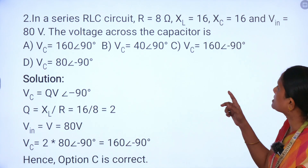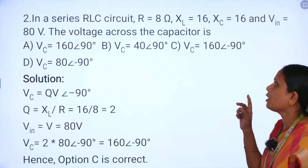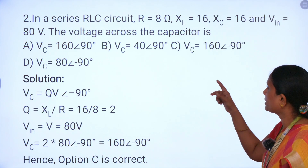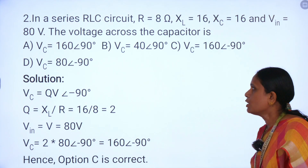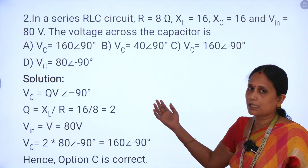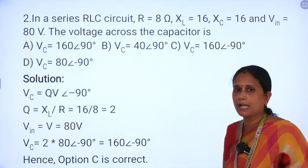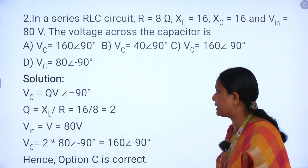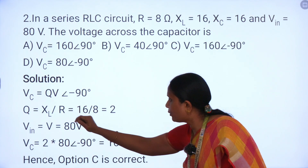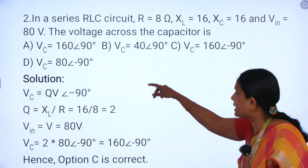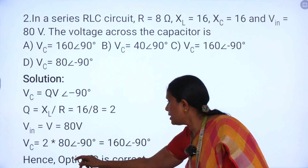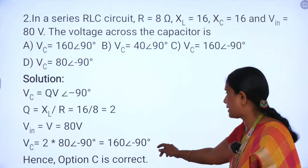Second problem: In a series RLC circuit, R = 8 Ω, XL = 16 Ω, XC is given, and voltage V = 80 V. We have to calculate the voltage across the capacitor. Options: 160∠90°, 40∠90°, 160∠−90°, 80∠−90°. Since the given XL and XC values indicate operation below resonance, the circuit acts as a purely capacitive circuit and VC = QV ∠−90°. First find Q = XL/R = 16/8 = 2. Then VC = 2 × 80 ∠−90° = 160∠−90°. So option C is correct.